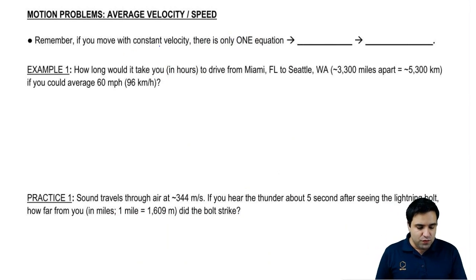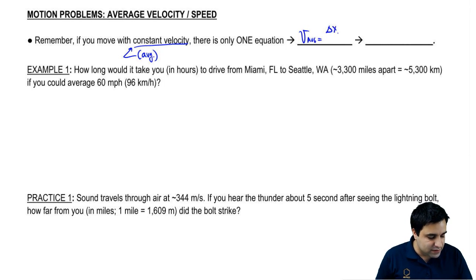Remember, first of all, that if you move with constant velocity or average velocity, there's only one equation which says that v average is delta x over delta t. One equation, three variables.